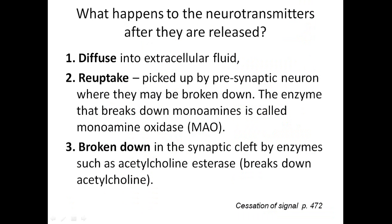After neurotransmitters are released, they have several fates: they could diffuse into the extracellular fluid and go elsewhere in the tissue, or they could be taken back up by the presynaptic neuron — that's called reuptake. Once back in the presynaptic neuron, they may be broken down or reused.